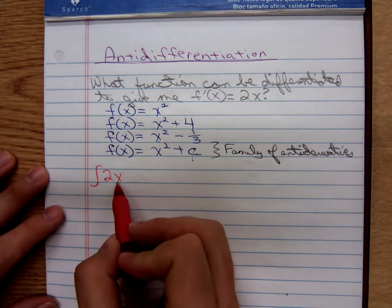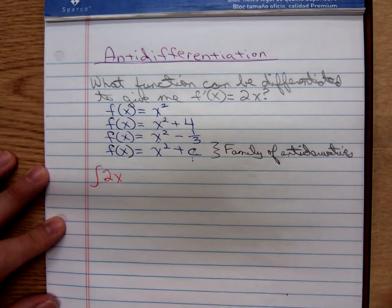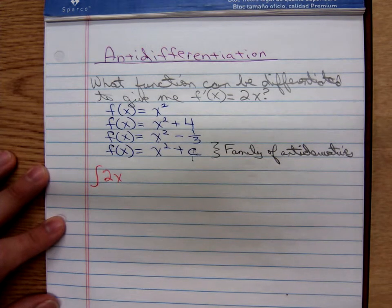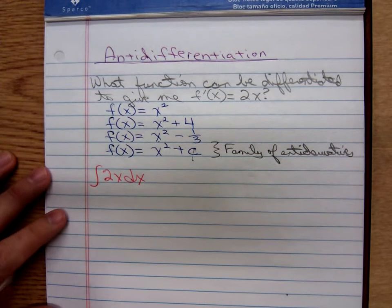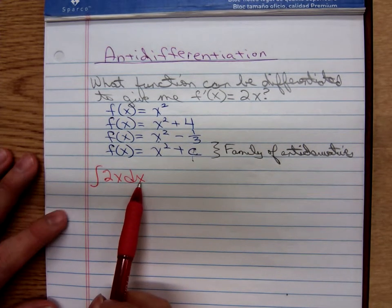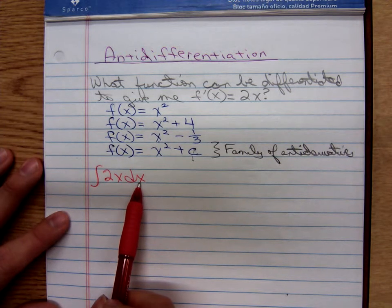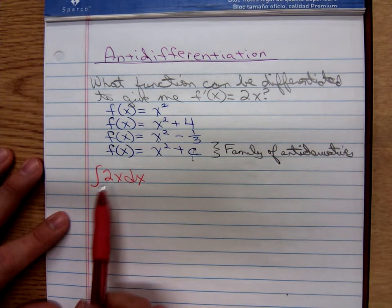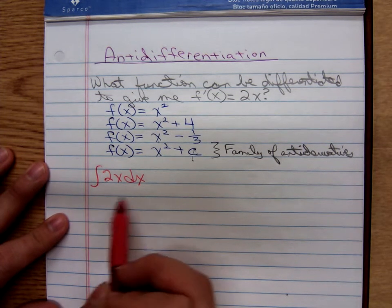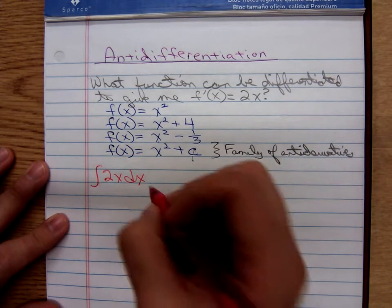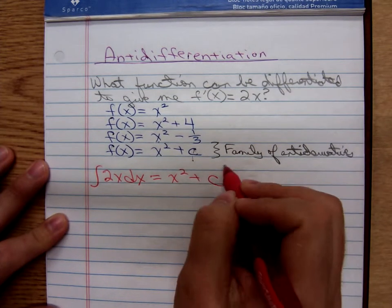And I have to tell people, after the last two topics, implicit differentiation and related rates, we should see the importance of telling us what's the variable. This is saying when you're differentiating in terms of x, what function would give you a derivative of 2x? This is called the family of antiderivatives. And we would say that that's x² + c.